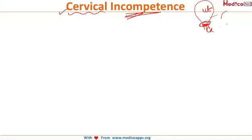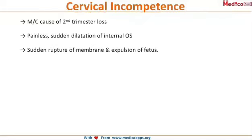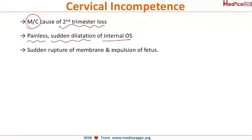Cervical incompetence is the most common cause of second trimester abortions, characterized by painless and sudden dilatation of the internal os. This is followed by sudden rupture of the membranes, followed by a gush of amniotic fluid outside, and then expulsion of the fetus occurs.